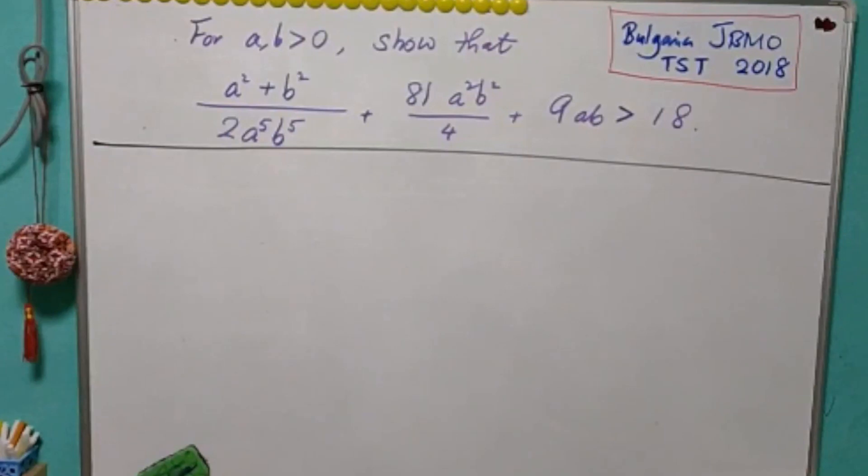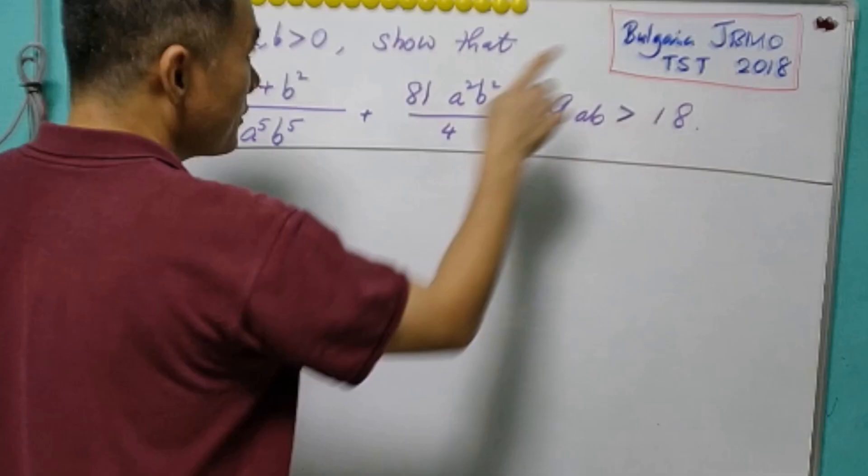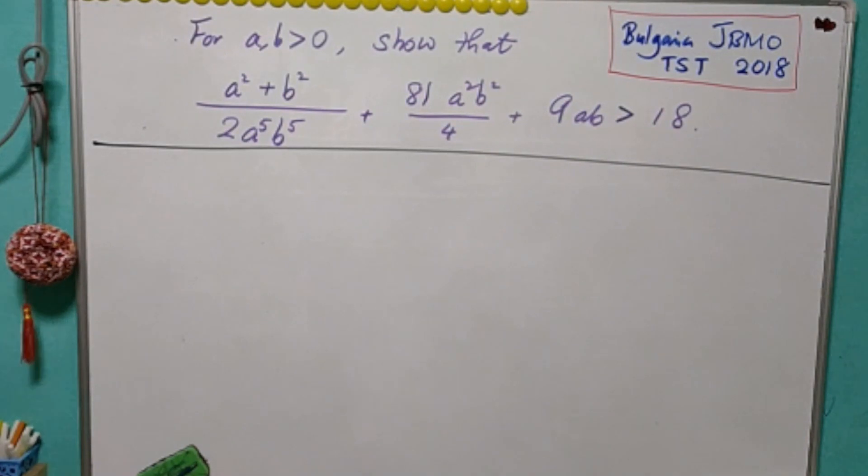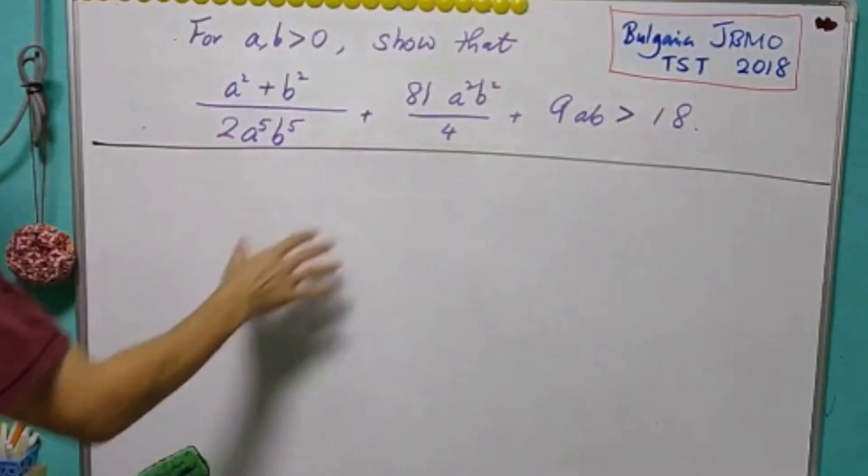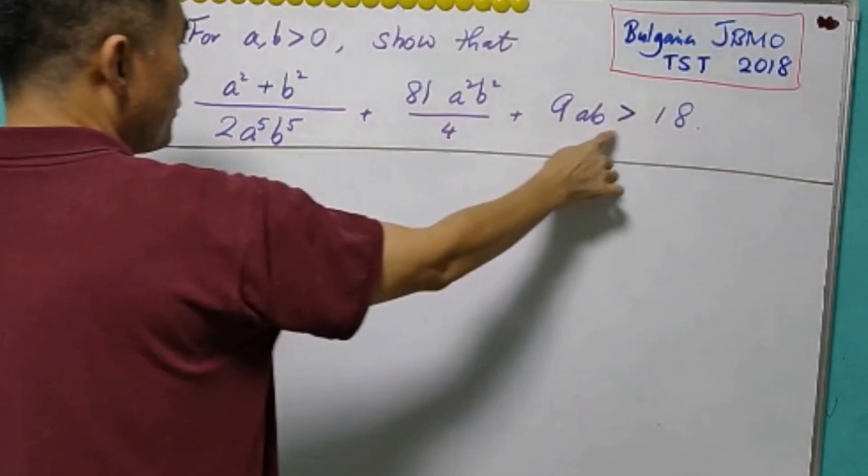This question comes from Bulgaria, JBEMO, Tim's Action Test 2018. So for this question, a and b are positive real numbers. We are asked to show that this expression is strictly greater than 18.